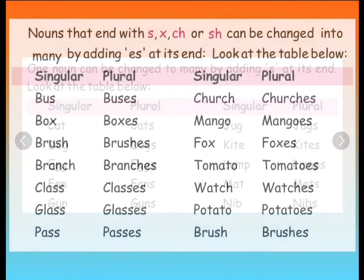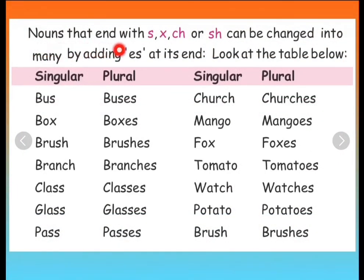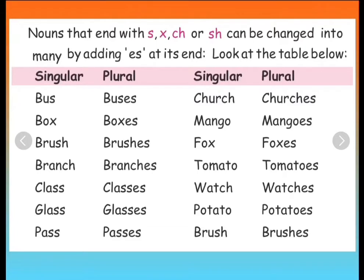Very good. Now, there are nouns that end with S, X, CH or SH. They can be changed into many by adding ES at its end. Look at the table below. In the below table, there are words which end with alphabet S, alphabet X, alphabet CH and SH. Let us see how to change it into plural by adding ES.